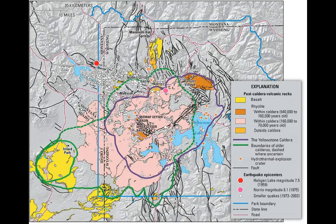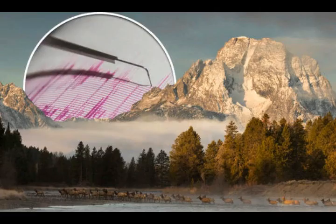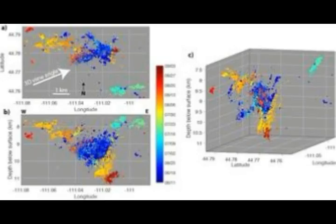According to USGS in the recent Caldera Chronicle, earthquake swarms are common at Yellowstone — but why do they occur? Are they driven by magma migration or water? Steady creep along faults? All three are possible, and tracking the style of earthquakes can reveal the causes.